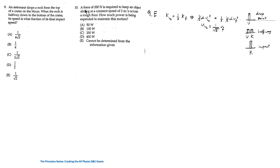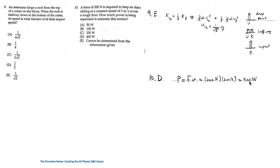For question 10, a force of 200 Newtons is required to keep an object sliding at a constant speed of 2 meters per second across a rough floor. Using power = force × velocity, power = 200 N × 2 m/s = 400 watts, so the answer is D. Thank you for watching — please like and subscribe and see you in the next video.